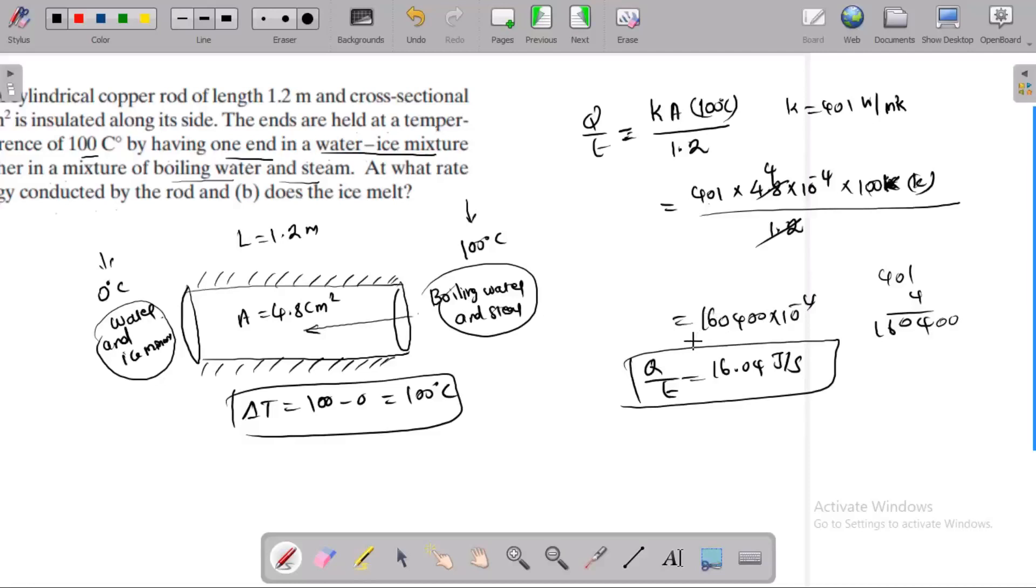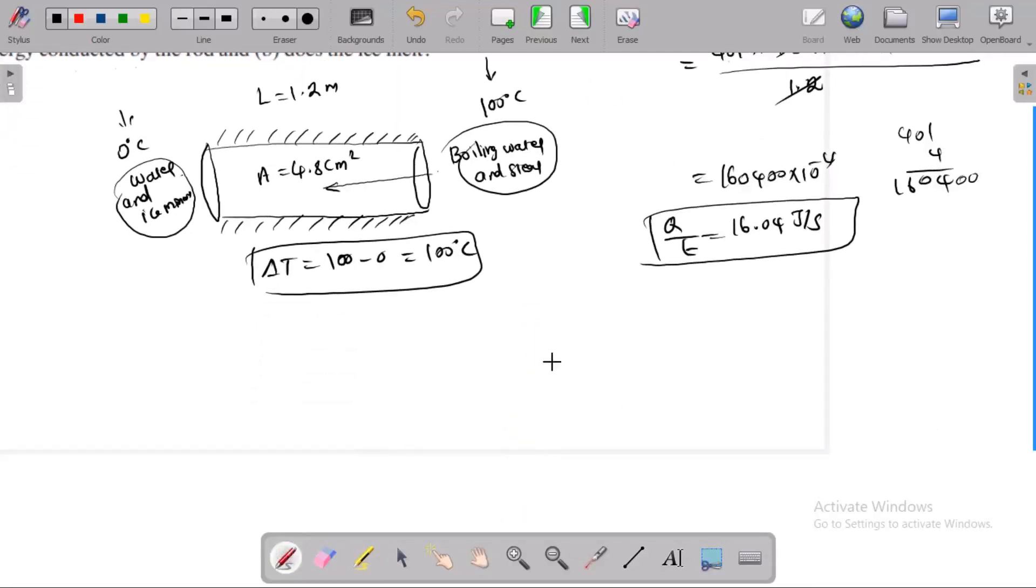Okay, part B: Does the ice melt? The melting rate. Okay, we know that there is latent heat involved in the water and ice mixture. The heat transfer rate is equal to m into the latent heat of fusion. So the melting rate, we need to find the melting rate with respect to time. So dm/dt is equal to...